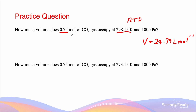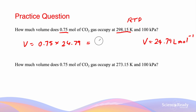This means that for 0.75 moles of CO₂ gas, the volume will equal 0.75 multiplied by the molar volume of 24.79, and that gives a value of 19 liters to two significant figures — because two significant figures is the smallest amount given to us in the question.